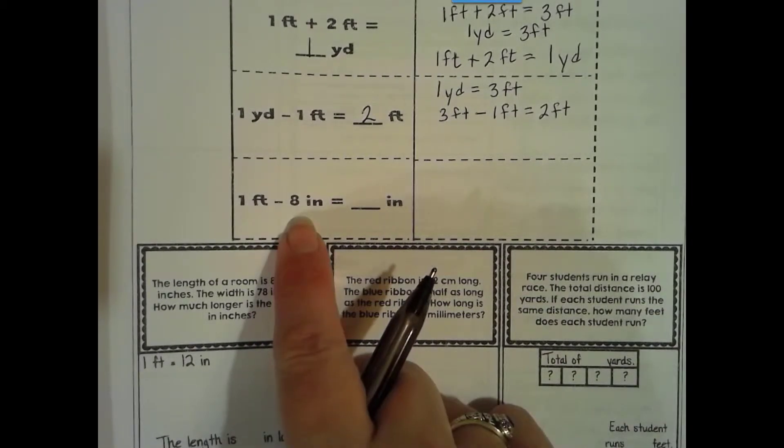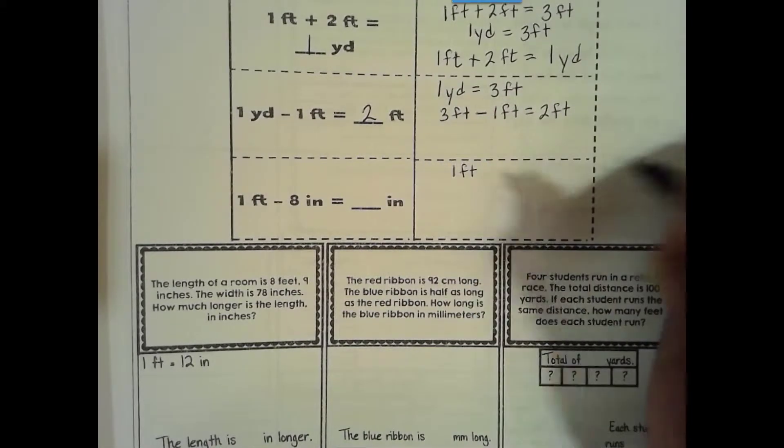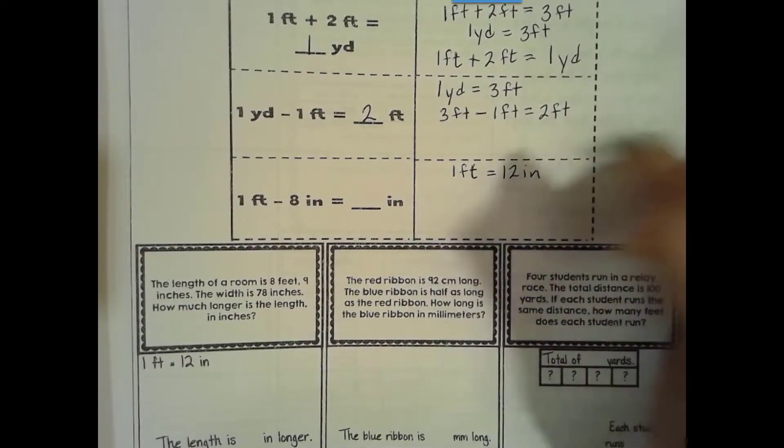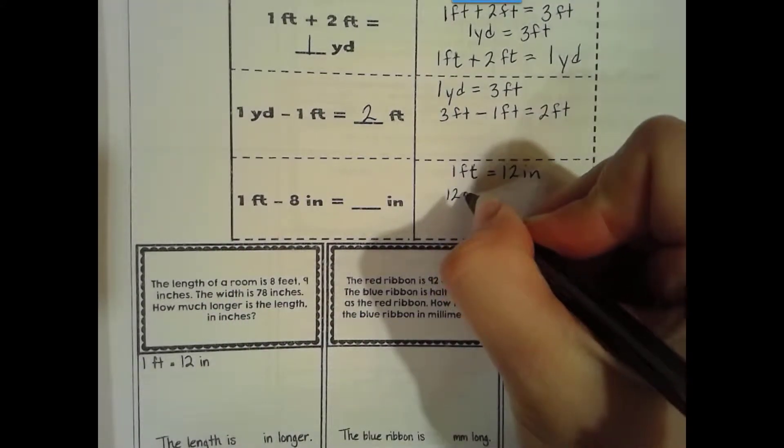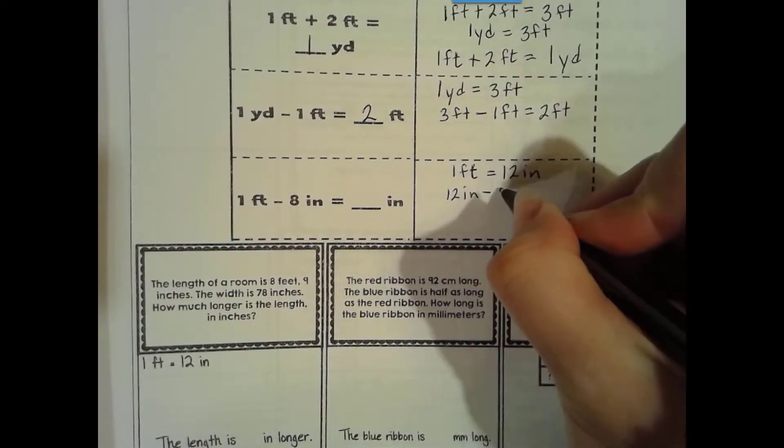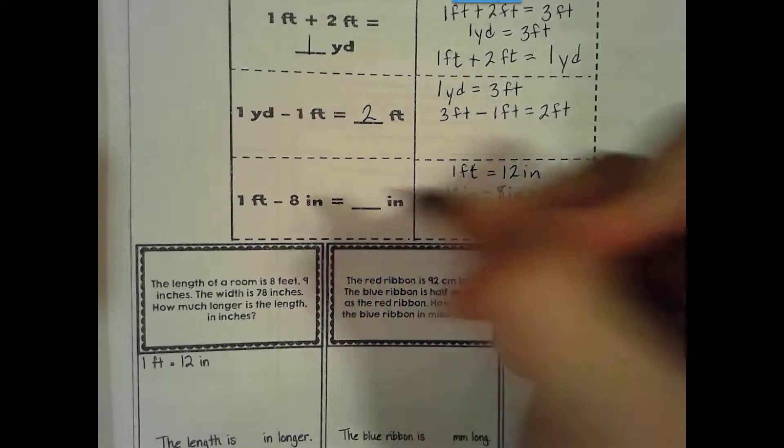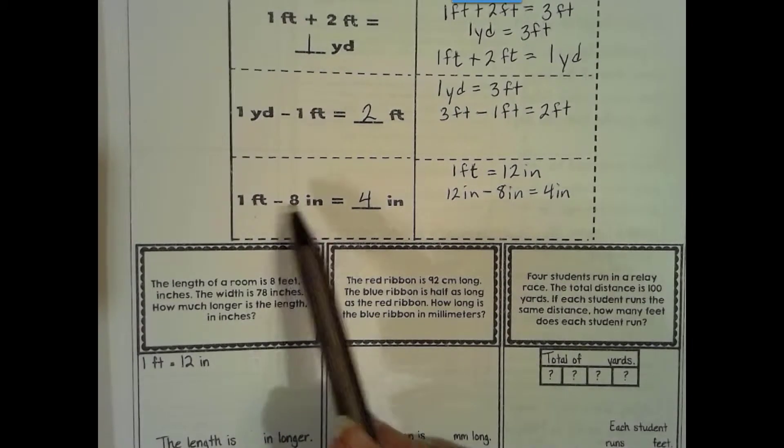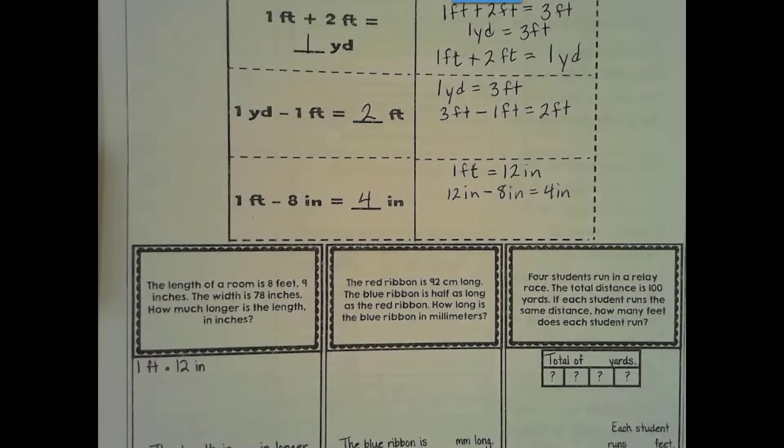1 foot take away 8 inches is how many inches? Well, they're not in the same units, so we have to change. 1 foot is equal to 12 inches. So now that I have converted it into the same units, I can now subtract. 12 inches take away 8 inches is 4 inches. So we have to have them the same units. I can't do 1 foot take away 8 inches. I have to change it to inches. So we're going to be using some conversion having to do with distance in these problems.